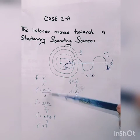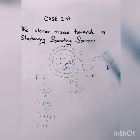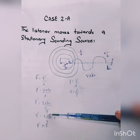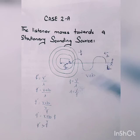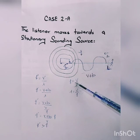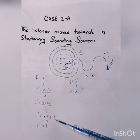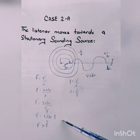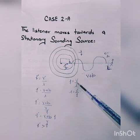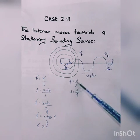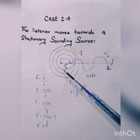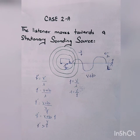The speed of sound apparently increases, which is why the frequency increases when the listener moves towards the source. The new frequency F', obtained due to the motion of the listener towards the source, is greater than the original frequency F when both are at rest. So frequency increases and pitch also increases, but wavelength remains the same. In this case, frequency changes due to the change in apparent speed of sound, not due to change in wavelength.